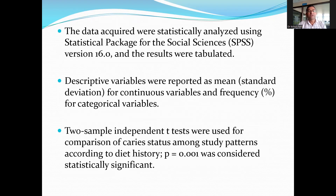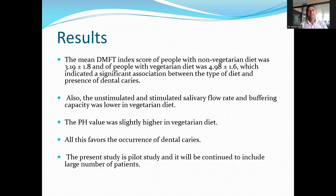The data was acquired in Excel and subjected to statistical analysis; descriptive variables were recorded. Regarding the results, the mean DMFT index score of people with a non-vegetarian diet was found to be 3.19, and that of people with a vegetarian diet was found to be 4.98, indicating a significant association between type of diet and the presence of dental caries. Additionally, the unstimulated and stimulated salivary flow rate and buffering capacity were lower in the vegetarian group, while the pH value was slightly higher in the vegetarian diet — all of which favor the occurrence of dental caries.